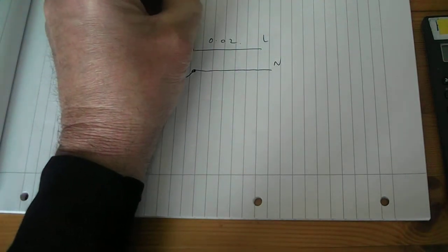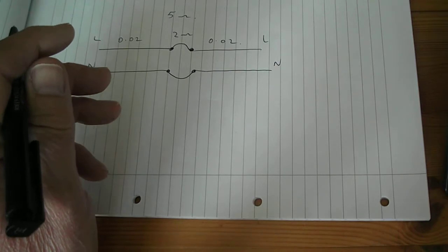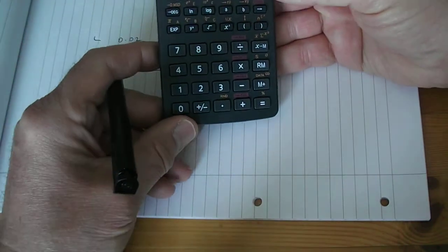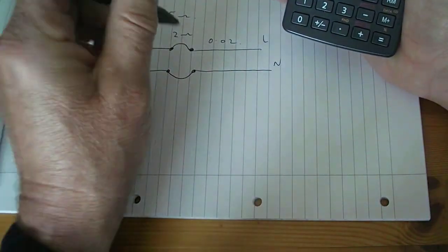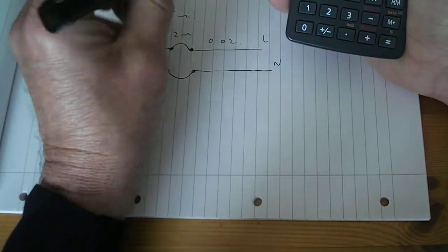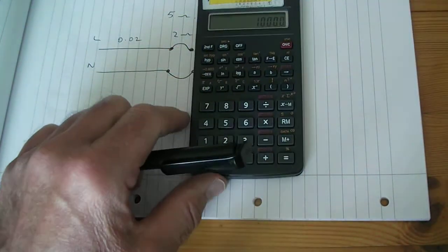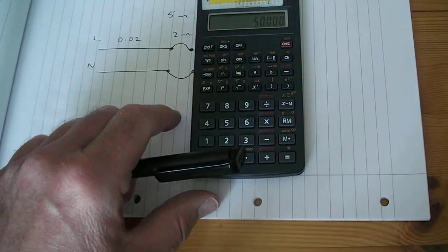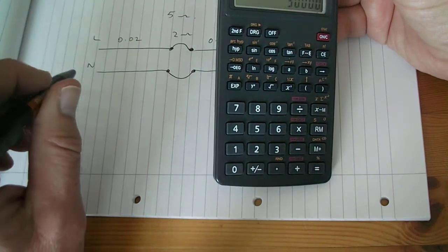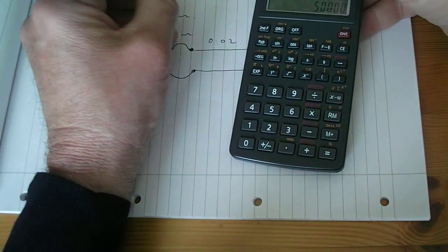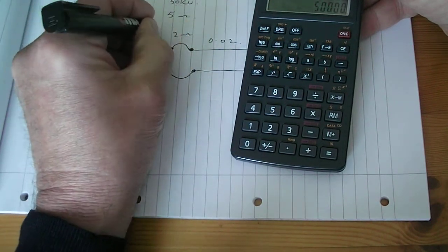Then the I squared R losses in that joint would be quite high. If that was 5 ohms and I had my 100 amps going through it, that particular link there at 5 ohms is 100 squared times 5 equals 50, 10,000 watts, 50 kilowatts, which is quite a lot of heat isn't it.